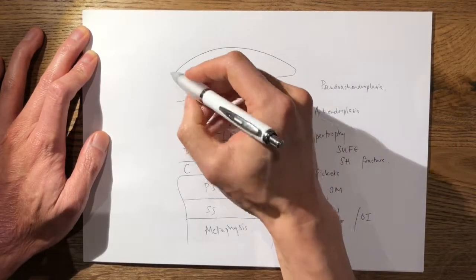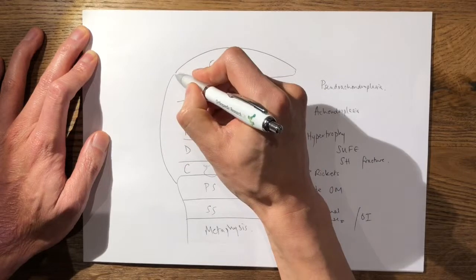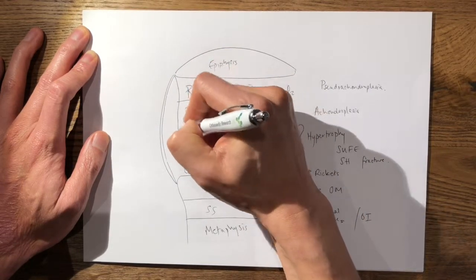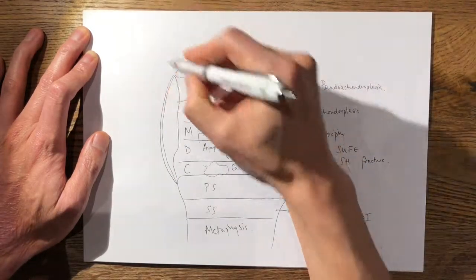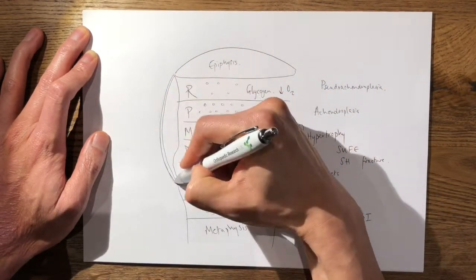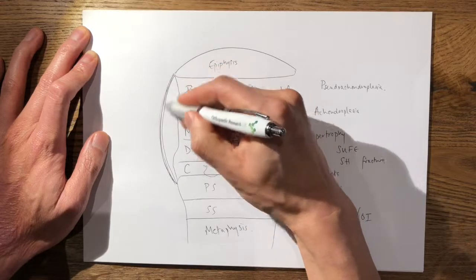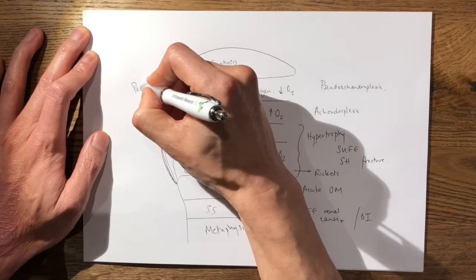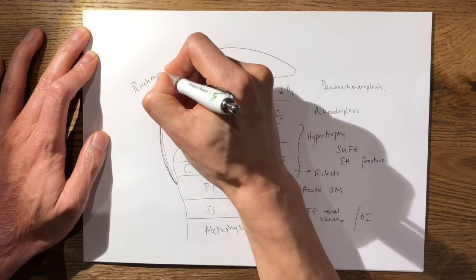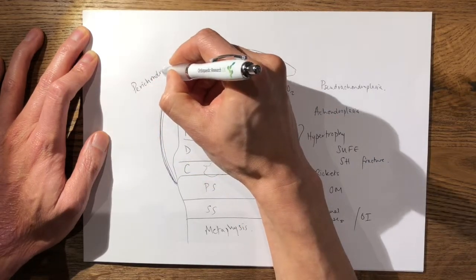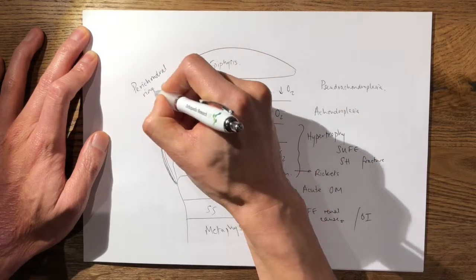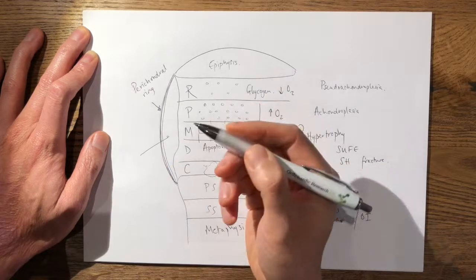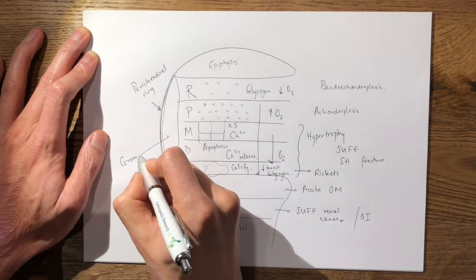It's important to now at this point let your examiner know that actually at the periphery of the physis is also a very important structure, namely a fibrous band at the periphery which helps to anchor the periphery of the physis, known as the perichondral ring of Lacroix. That's the role of the perichondral ring.